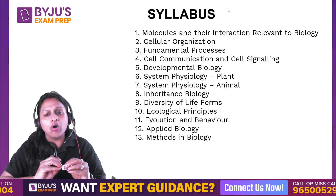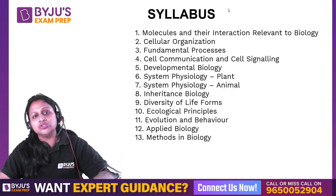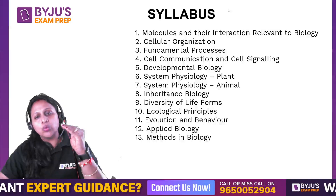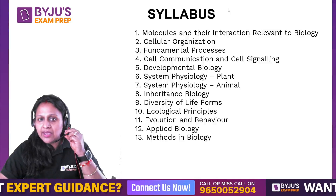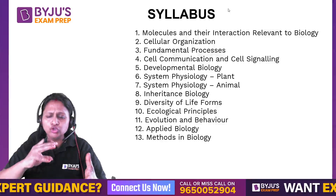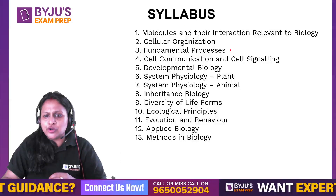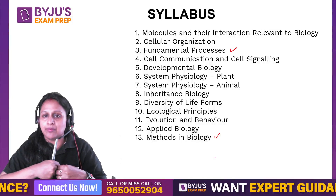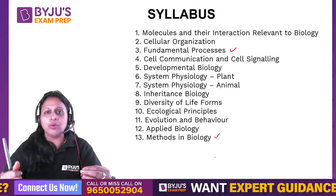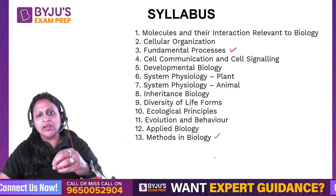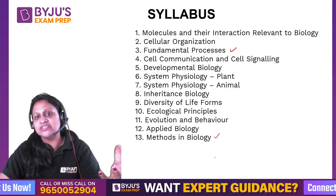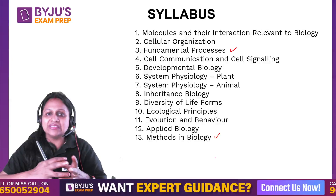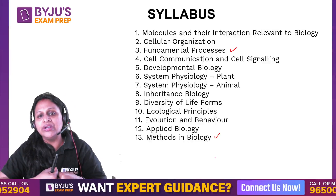Every unit has almost the same weightage — there is no major variation. The exam tries to give equal weightage, but the problem is that some units are merged with other units. For example, fundamental processes and methods in biology have many similar topics, so experiment questions can be counted in either, which increases the number either way.